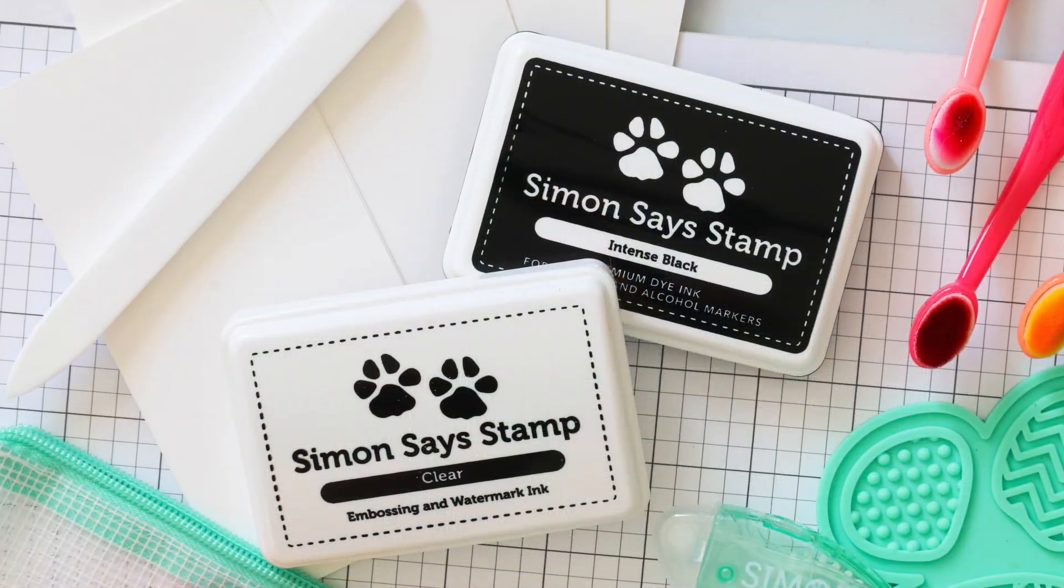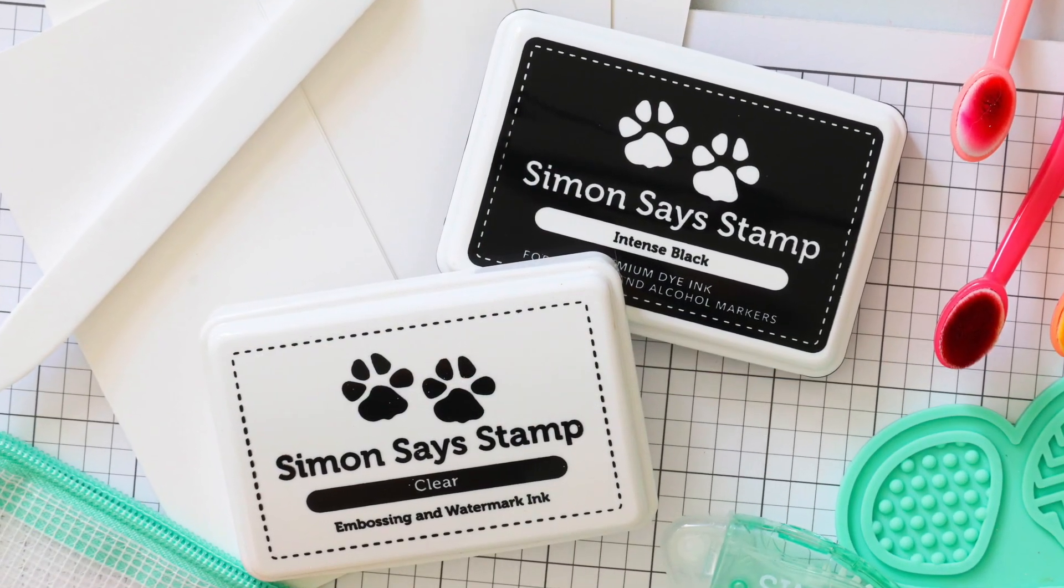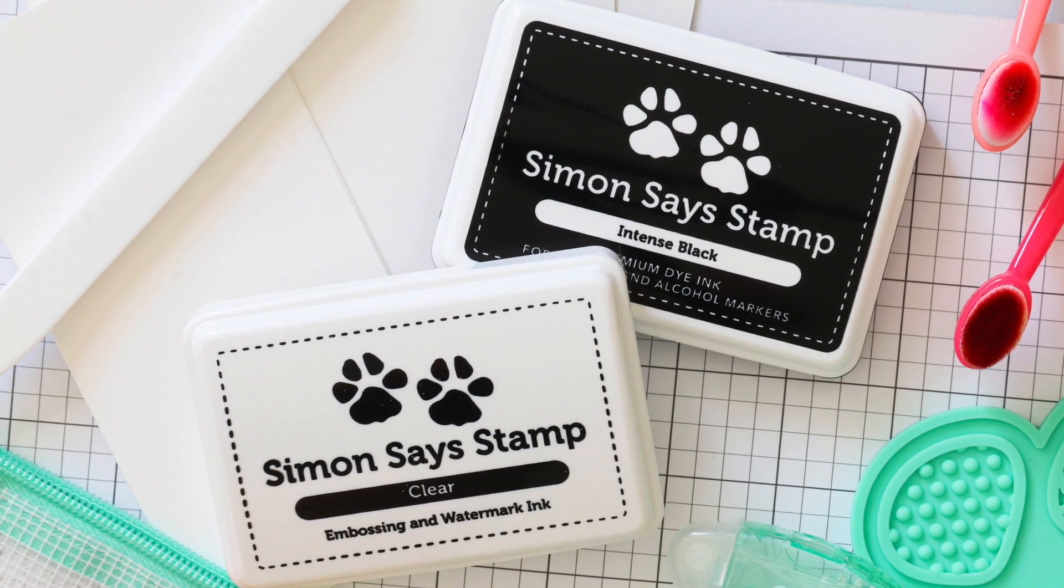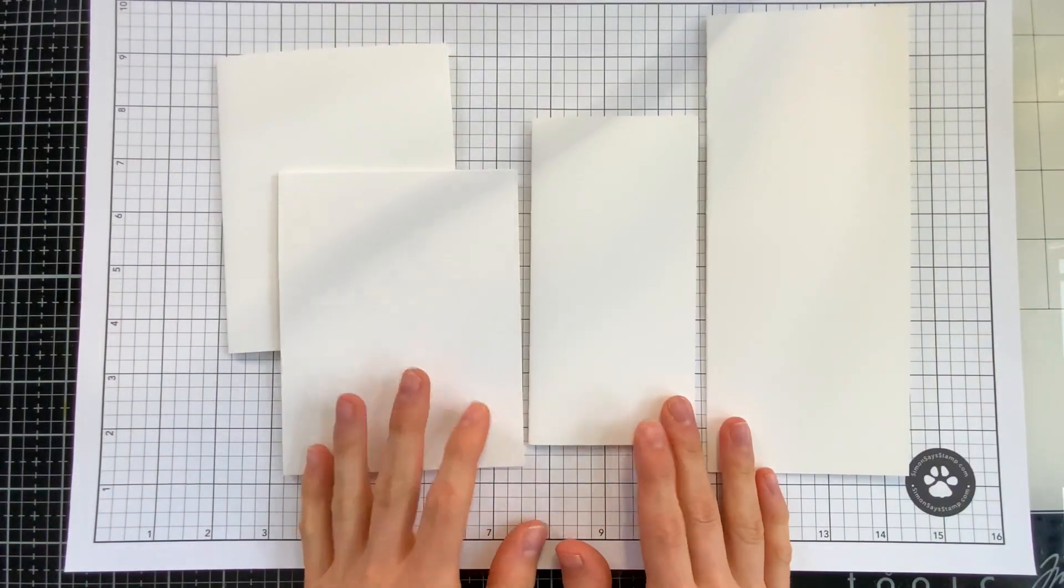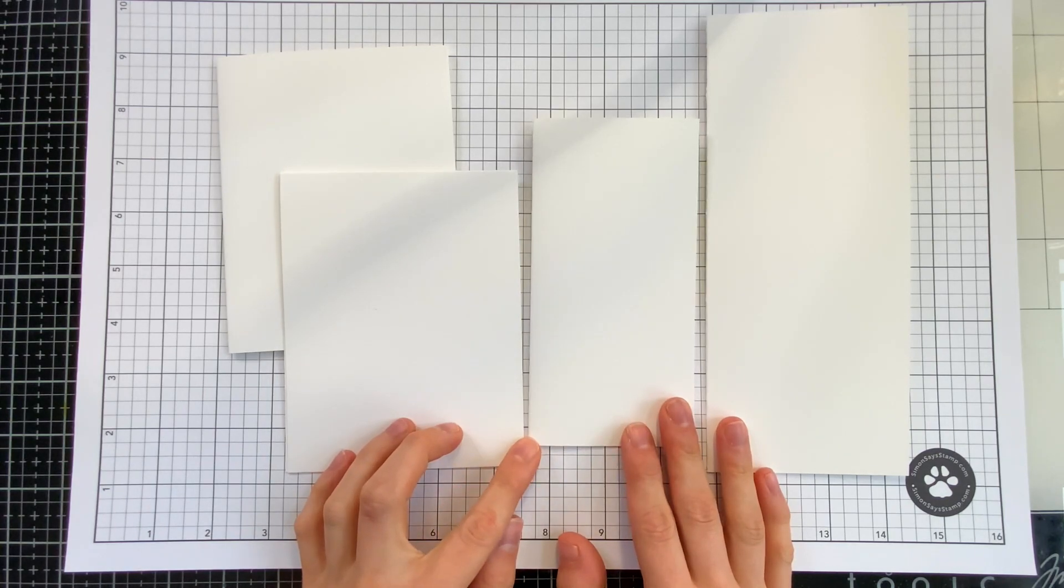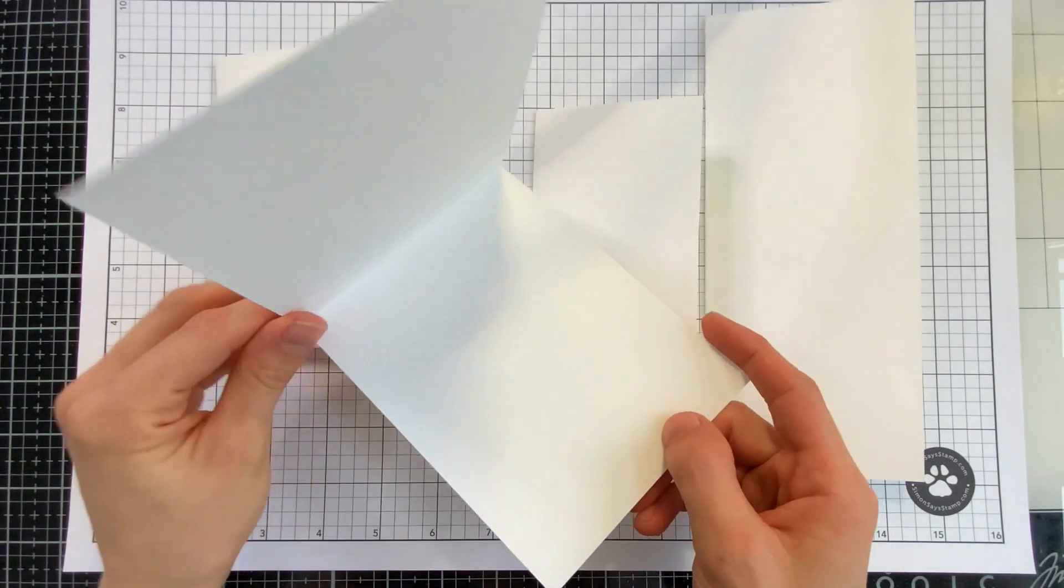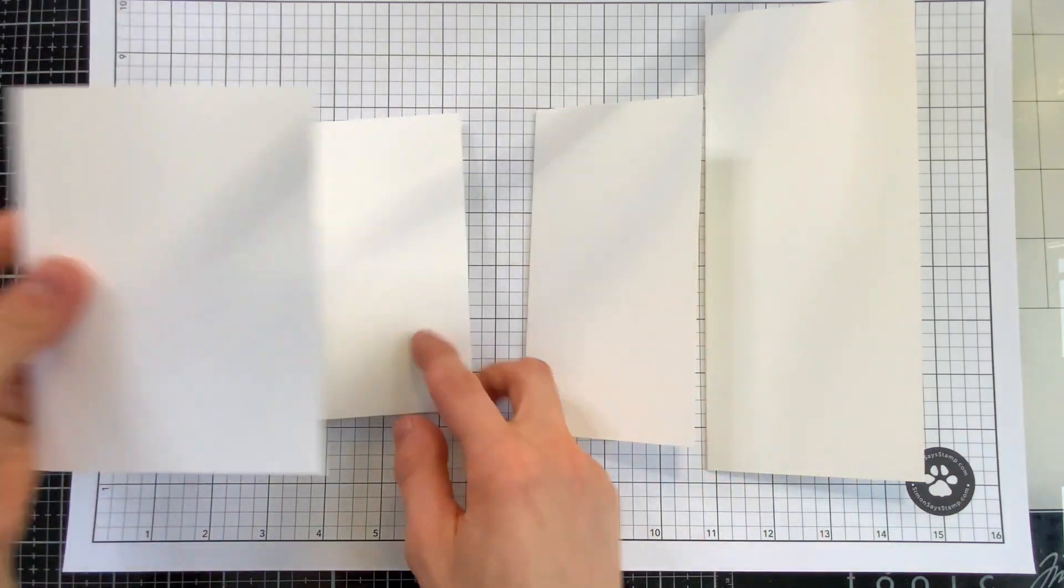Every card needs a base to begin. I think one of the most useful items you could have in your craft room is a stack of pre-scored card bases. We have bright white bases in all of the most popular card sizes available which include A2 top fold, A2 side fold,